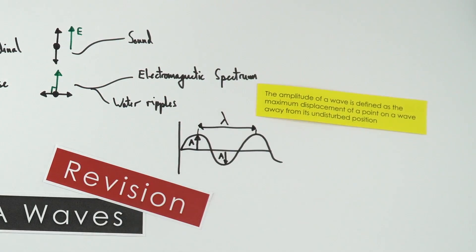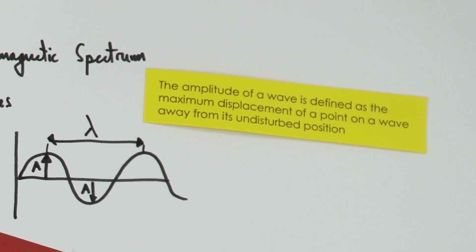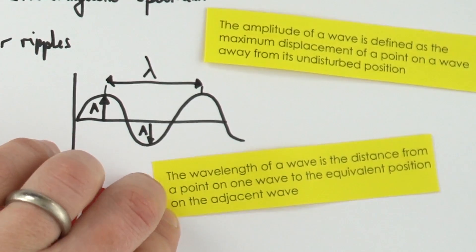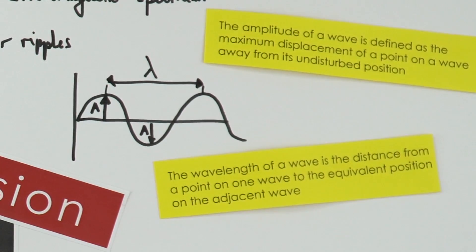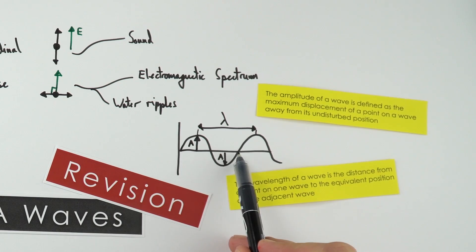We define the amplitude of a wave as the maximum displacement of a point on the wave from its undisturbed position, while the wavelength is the distance from a point on one wave to the equivalent point on the adjacent wave. It could be peak to peak, trough to trough, or maybe this point to this point.